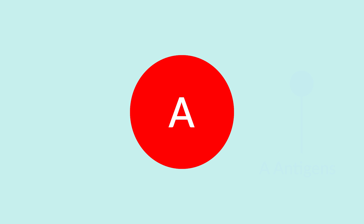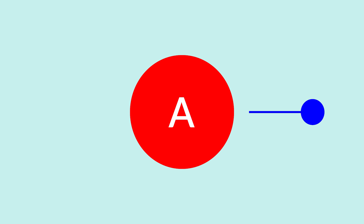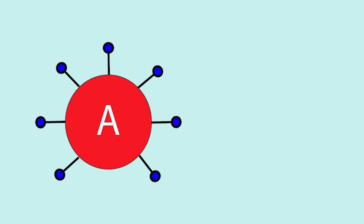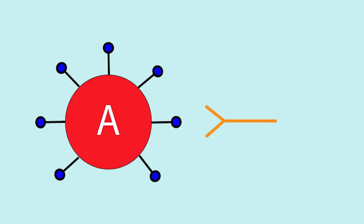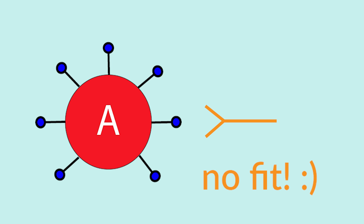This is an A blood cell type. The A blood cell has A antigens, which are located on the cell's outer surface. The A cell has a happy relationship with the B antibodies in the plasma, because the antigen binding sites on the B antibodies cannot bind with the A antigens on the A cells. They just don't fit.